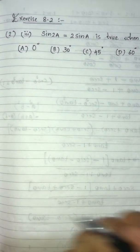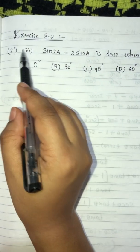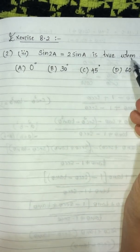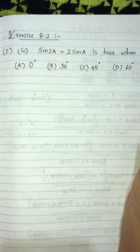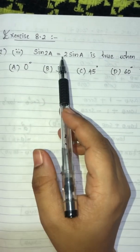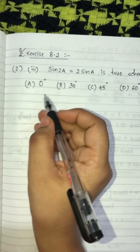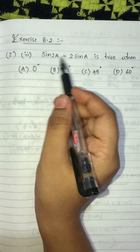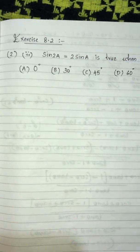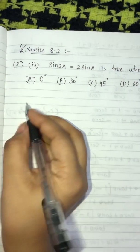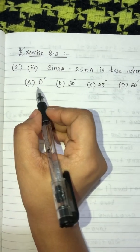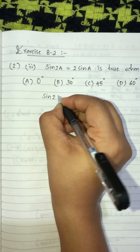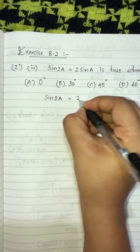Now the third sub-question: sin 2a = 2 sin a is true when a is equal to what? We need to apply this formula for each option. First option is a = 0 degree — apply sin 2a = 2 sin a.